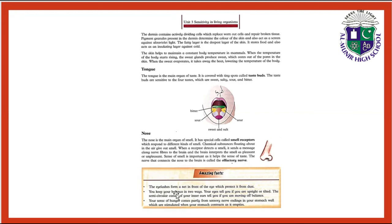Amazing facts: The eyelashes form a net in front of the eye which protects it from dust. You maintain balance in two ways — your eyes tell you if you are upright or tilting, and the semi-circular canals of your inner ears tell you if you are moving off balance. Your sense of hunger comes partly from sensory nerve endings in your stomach wall, which are stimulated when your stomach contracts and empties.